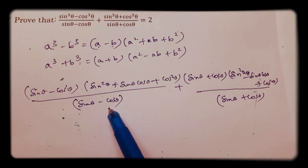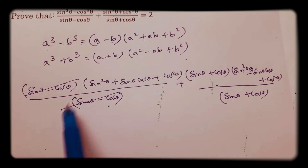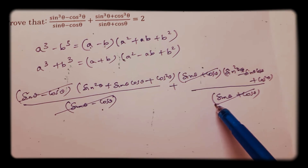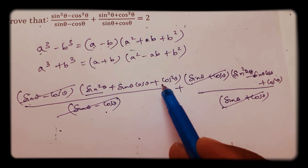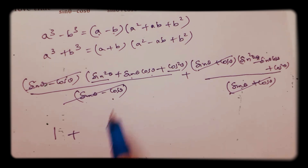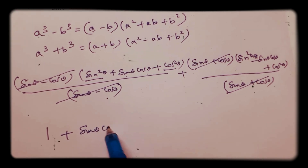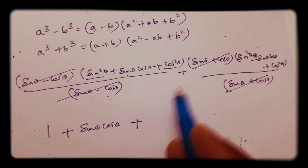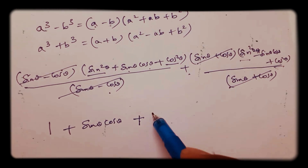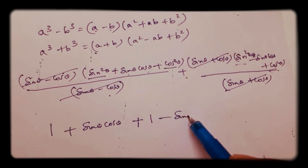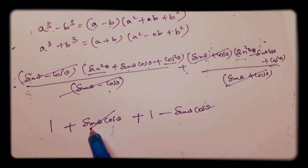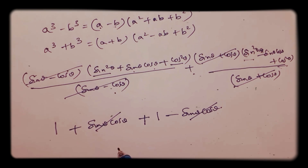Here, sin theta minus cos theta gets cancelled. And sin theta plus cos theta gets cancelled. We are left with sin square plus cos square plus sin theta cos theta, plus sin square plus cos square minus sin theta cos theta. Since sin square plus cos square equals 1, the sin theta cos theta terms cancel each other out.